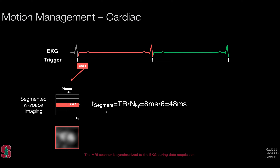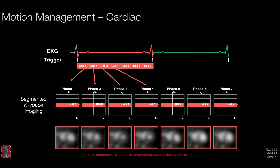The temporal footprint of that segment is equal to the TR — the time it takes to acquire a single echo — multiplied by the number of K-y lines in that segment. So if the TR is eight milliseconds and the number of lines in the segment is six, then this would have about a 48 millisecond temporal footprint. If we only acquire a very small number of lines, then we can only recover an image with relatively low spatial resolution. The next step is to repeat acquisition of that identical segment, filling different K-space frames, many times until the end of the first cardiac cycle. As a consequence, we'll have a very low resolution image of the heart at multiple cardiac phases, and this could be done in a single heartbeat.